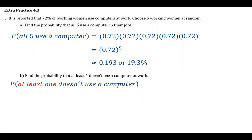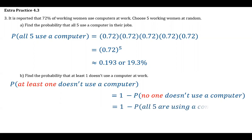So for our case, the probability of at least one that doesn't use a computer is going to be one minus the probability that no one doesn't use a computer. If no one is not using a computer, that means that everyone is. So it's the same thing as one minus the probability that all five are using a computer, which is the probability we just found in part A.